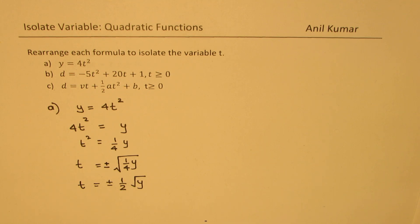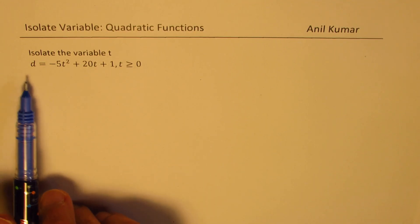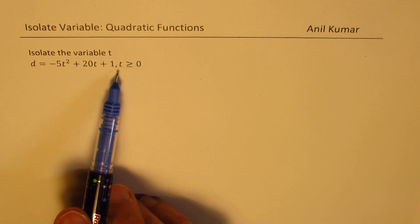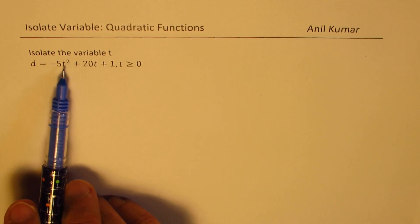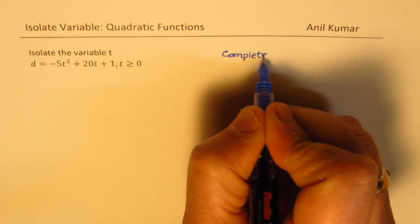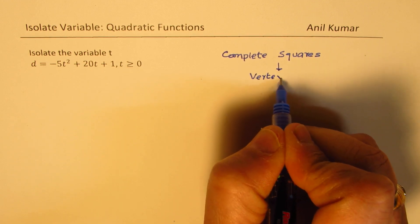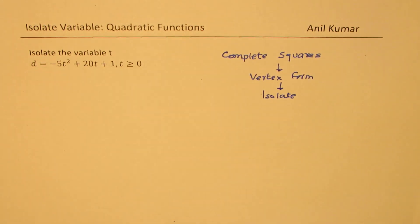Now let us see how to solve part b and c. To isolate the variable t from this given equation, which is d equals to minus 5t squared plus 20t plus 1, where t is greater than or equal to 0. This time t is greater than or equal to 0, so we'll only take the positive value. Now since t is involved by two terms, how do we isolate? The method to do it is to complete the squares. We need to write this equation in the vertex form and then we can isolate. You can always pause the video, try it out, and then look into my suggestions.